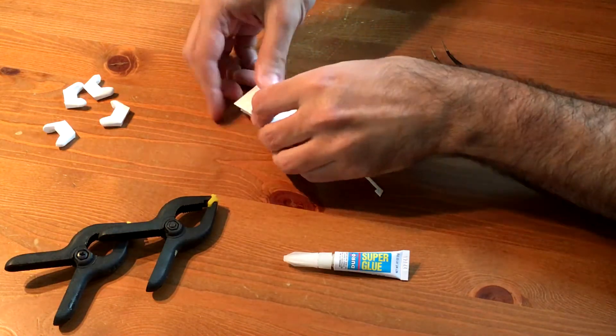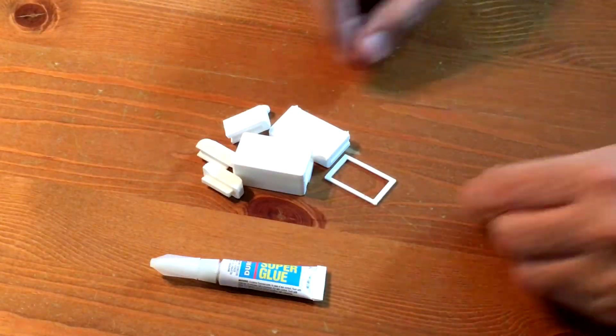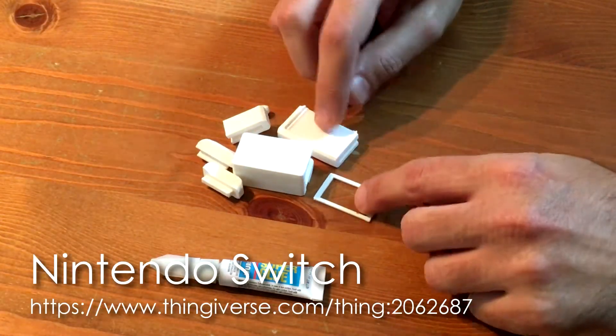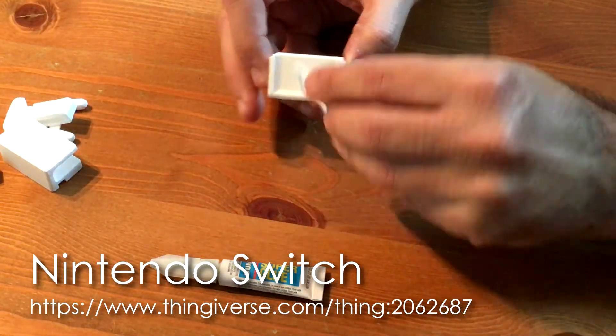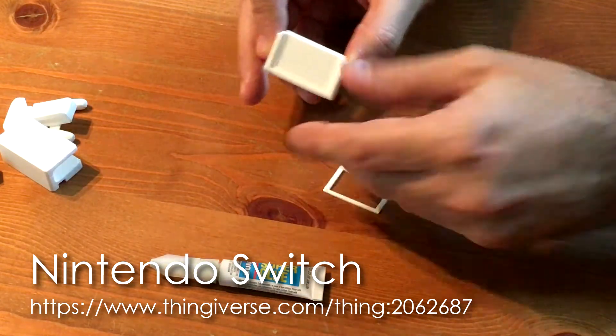Okay, this is a Nintendo Switch. It looks way more complex than it actually is. We're going to put most of these pieces aside for now—we're going to focus on these two. This is the actual console and then this is the frame that goes on top.